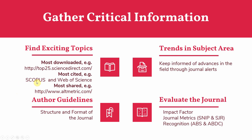You can also identify what is being cited these days by going to Scopus and Web of Science. Or, if you want to know what is being shared in the scientific community, go to Altmetric. Your university will have access to these websites. Identify the trends in the subject area and keep informed of advances in the field through journal alerts. Set yourself alerts from the journal and identify what journals are publishing these days.